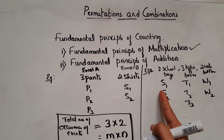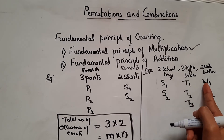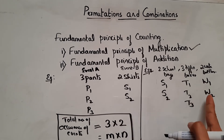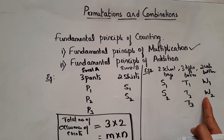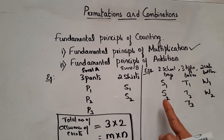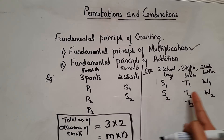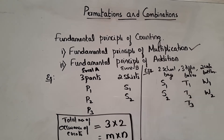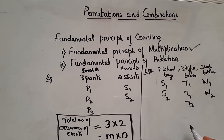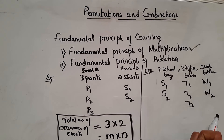So one possibility is S1, T1, W1. She can take S1, T1, W2. She can also take S2, T1, W1. So there are various possibilities. So how to find the total number of occurrences of the events?